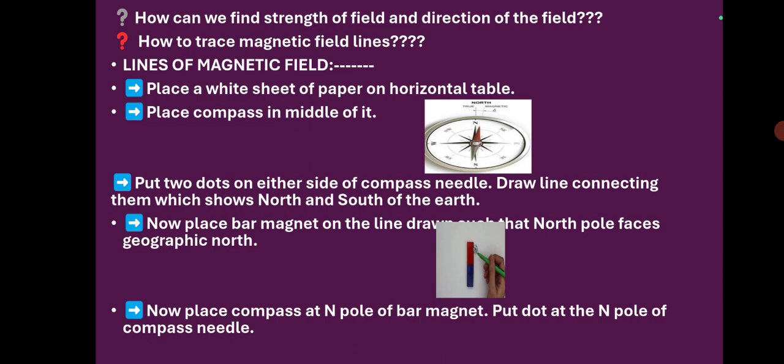First, how can we find the strength of field and direction of field? To know this, we must know about these lines of magnetic field. So first let us see how to trace the magnetic field lines.